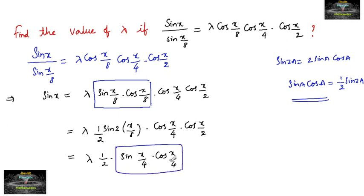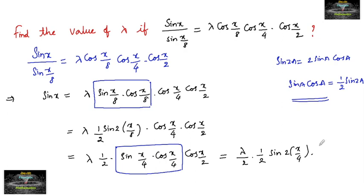Applying the formula again to sin(x/4)·cos(x/4) gives (1/2)·sin(x/2). So the expression becomes λ · (1/4) · sin(x/2) · cos(x/2).